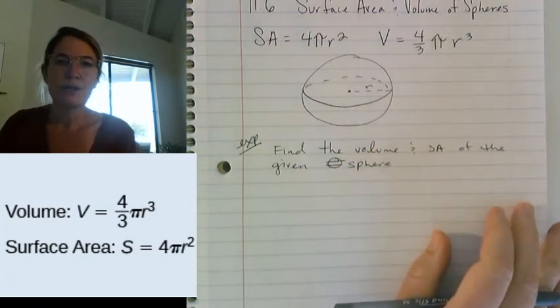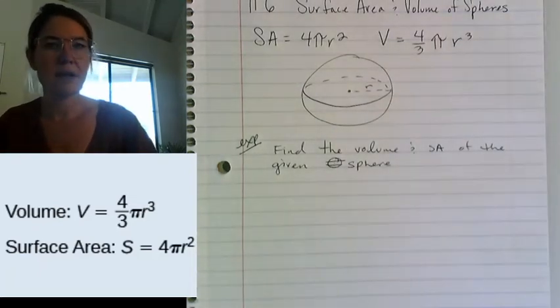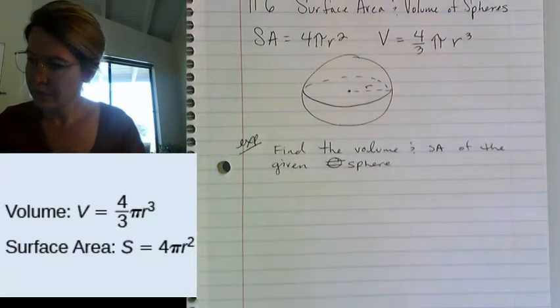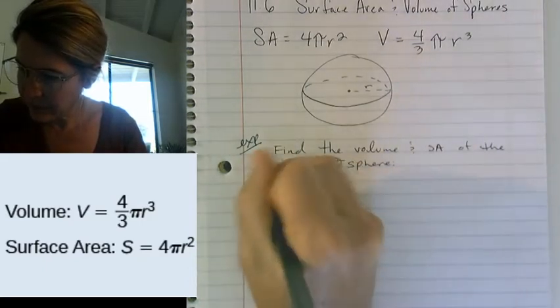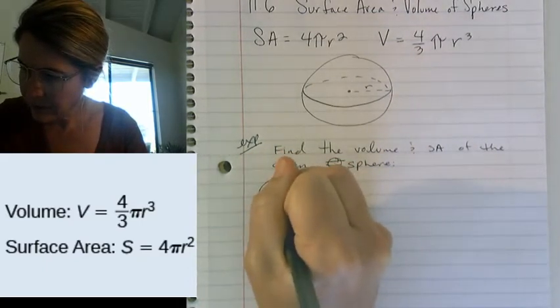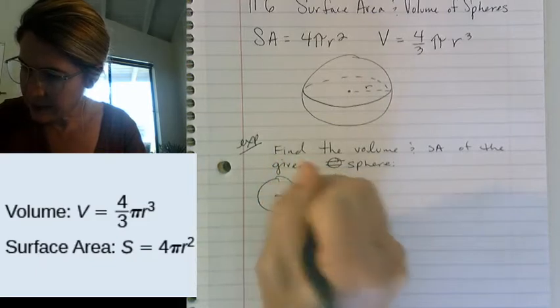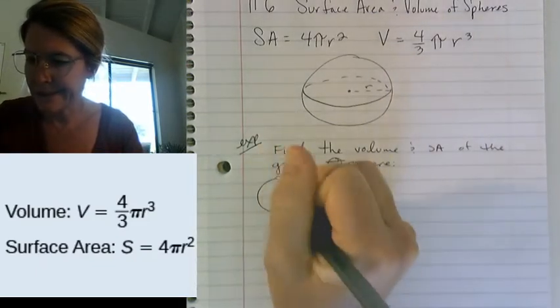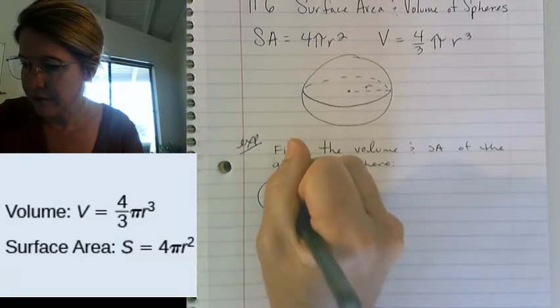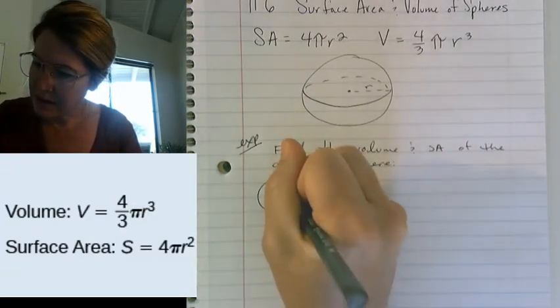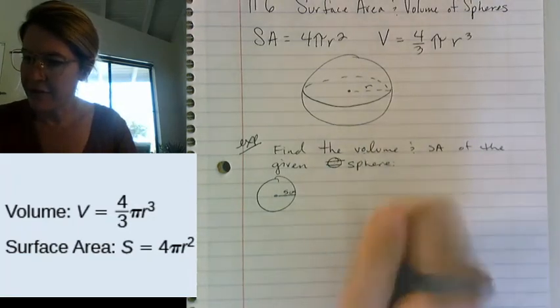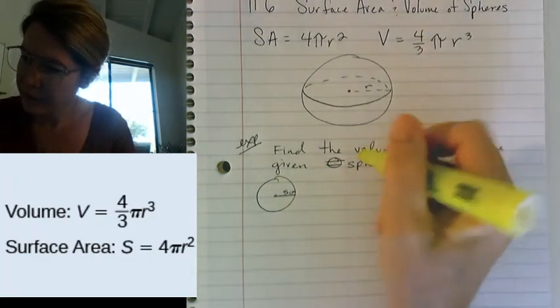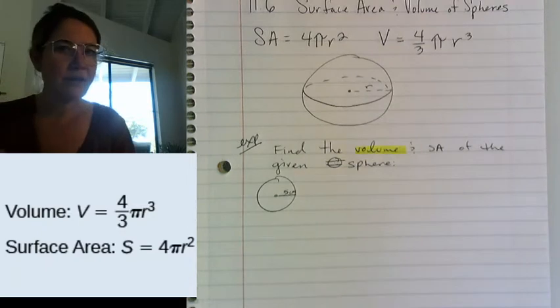All we would have to do is look at that sphere, figure out what its radius is. Let's say it's, I don't know, 5 centimeters. So we're going to find the volume and surface area.